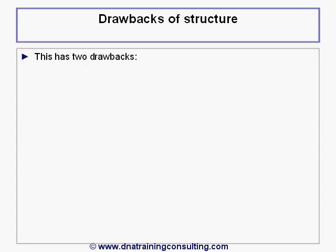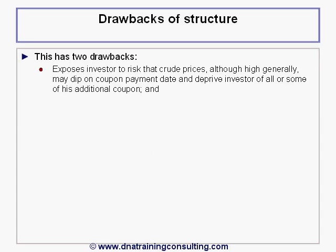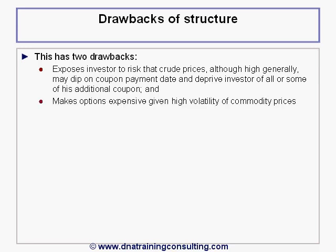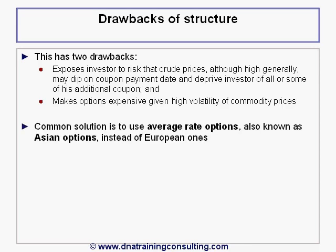This has two drawbacks. First, it exposes the investor to the risk that crude prices, although high generally, may dip on the coupon payment date and deprive the investor of all or some of the additional coupon payments. And second, it makes the options quite expensive given the typically high volatility of commodity prices. A common approach to managing these two problems is to use average rate options, also known as Asian options, instead of European ones.